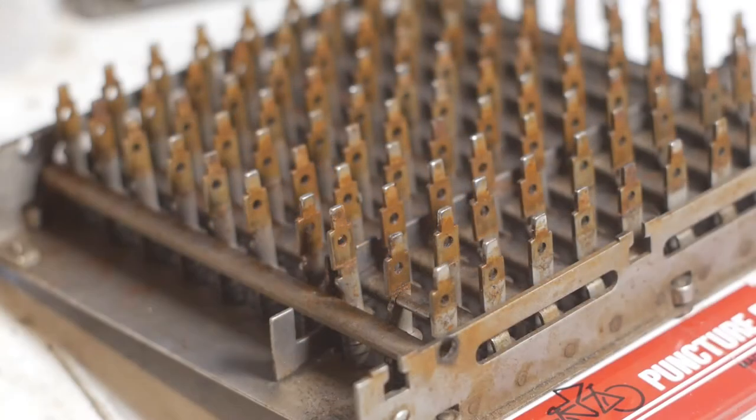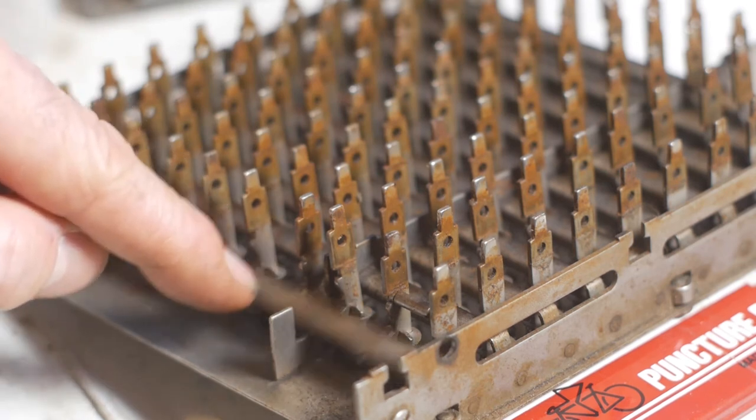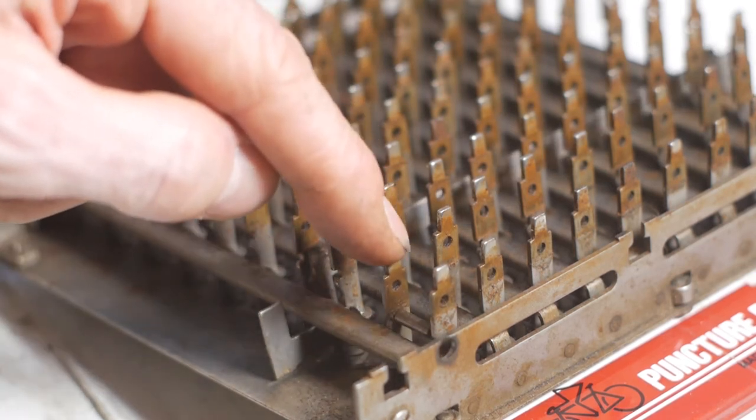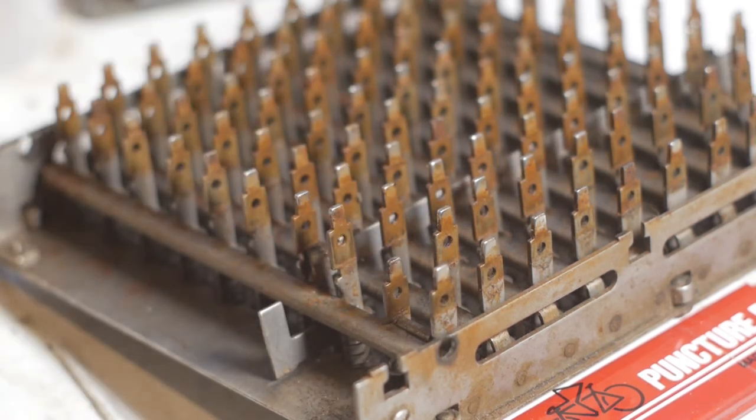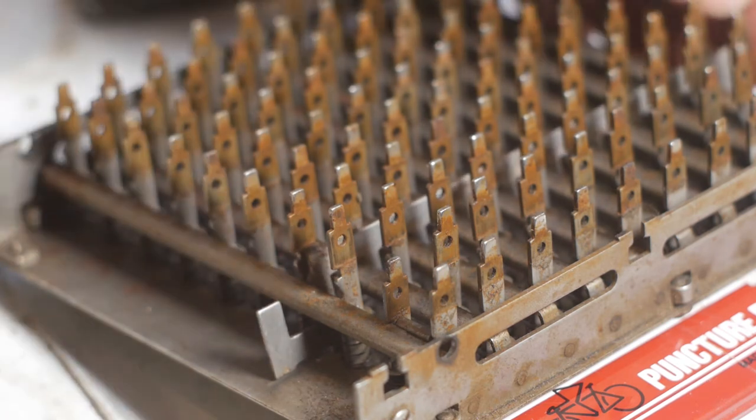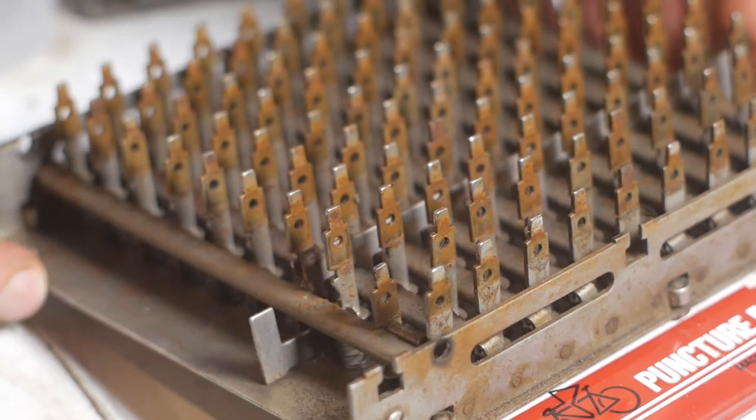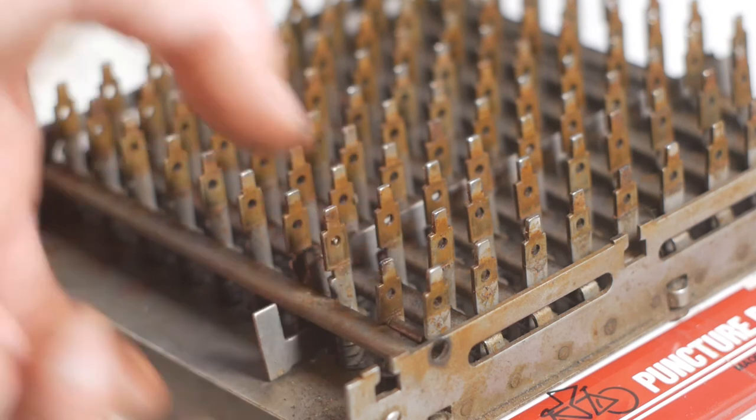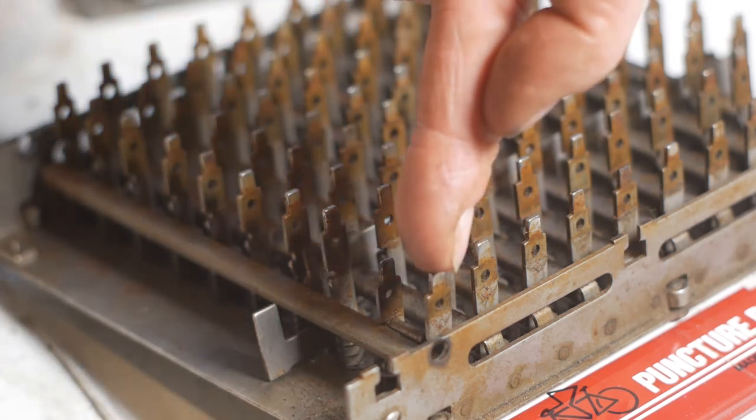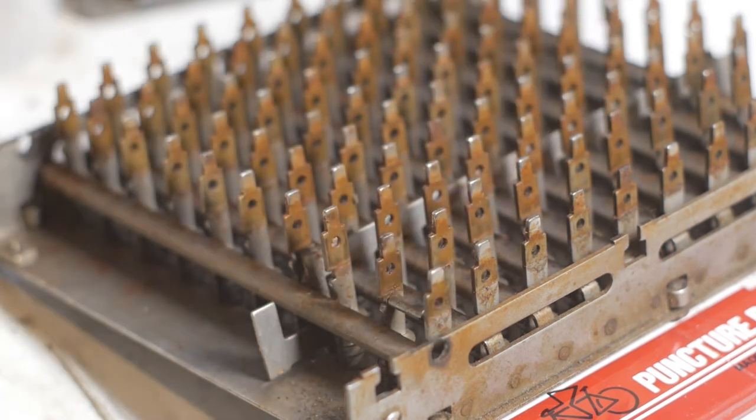If we take a closer look at the latching system in normal operation as you press one of the keys this spring-loaded bar should latch the key in the down position and it'll stay like that until you press the keyboard clear button which will slide this plate across releasing all of the columns at the same time like that or you crank the handle without the repeat engaged or you press the zero key for that column which will clear a single column.